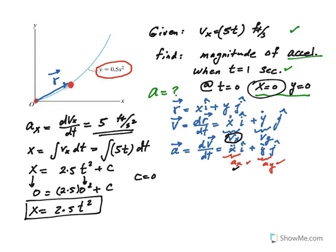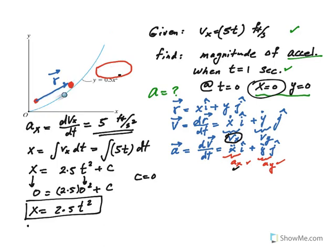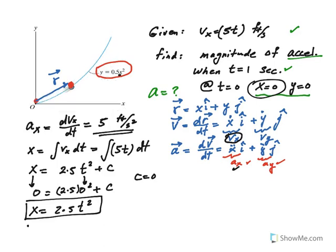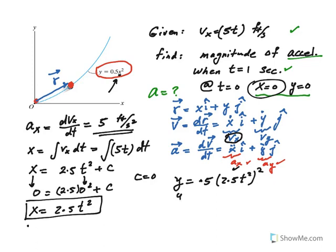Once you have x, then you are pretty much done, because x is related to y based on this equation. So y is equal to 0.5x squared. But what is x? 2.5t squared squared. So be careful. When you clean this up, you should get 3.125t to the power 4. Now go ahead and take the derivative once, and that would be your vy.